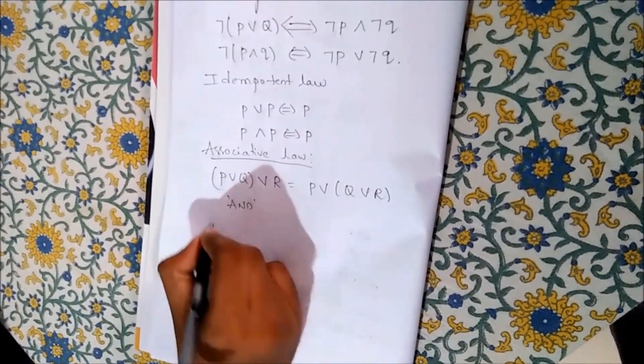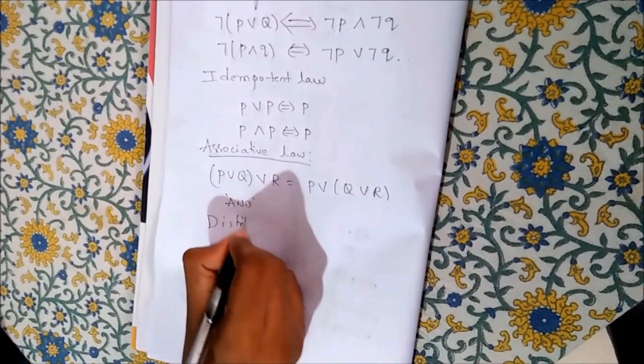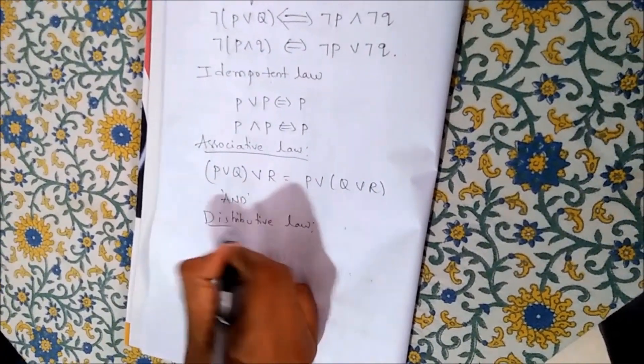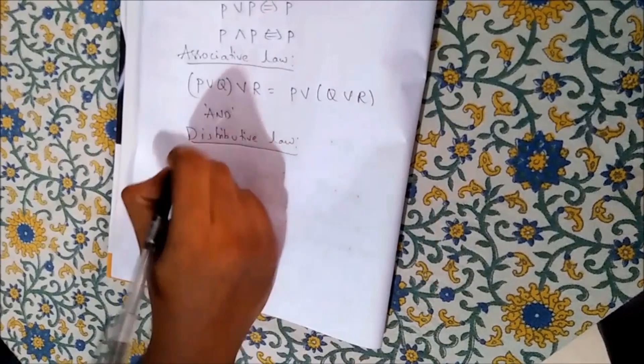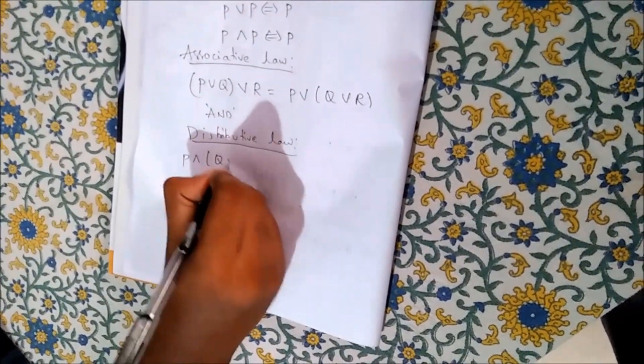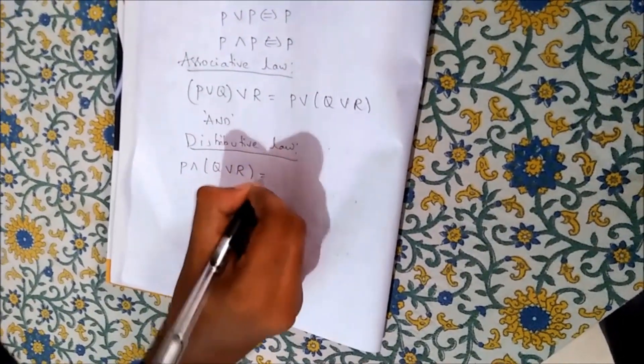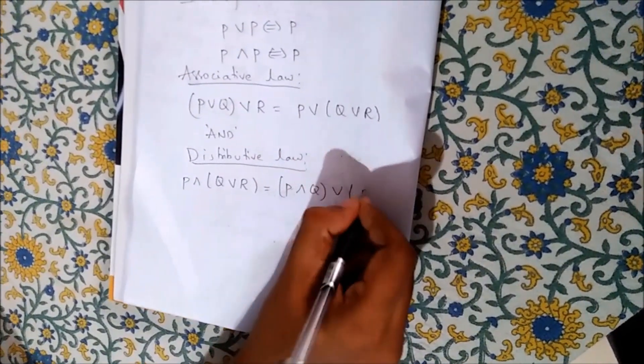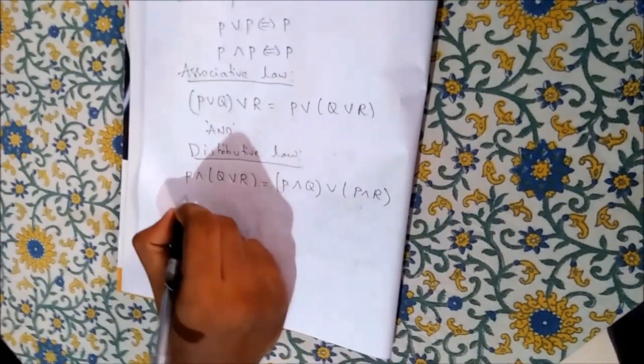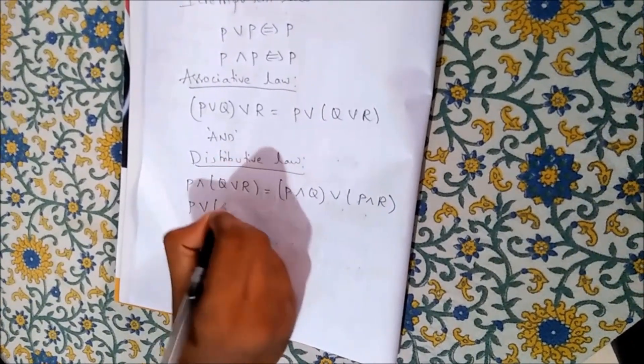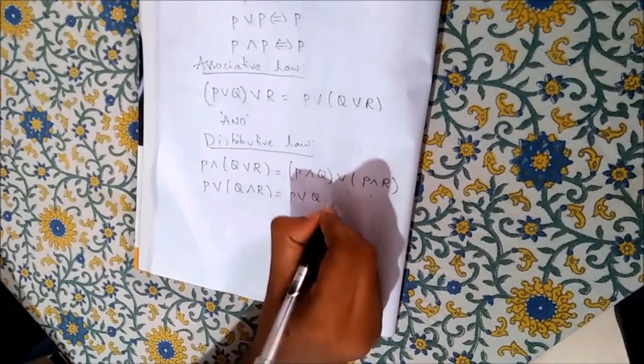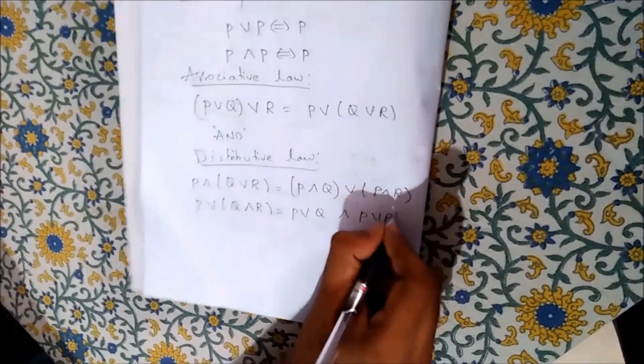Next, distributive law. P and Q or P and R. Similarly, for or, P or Q and P or R.